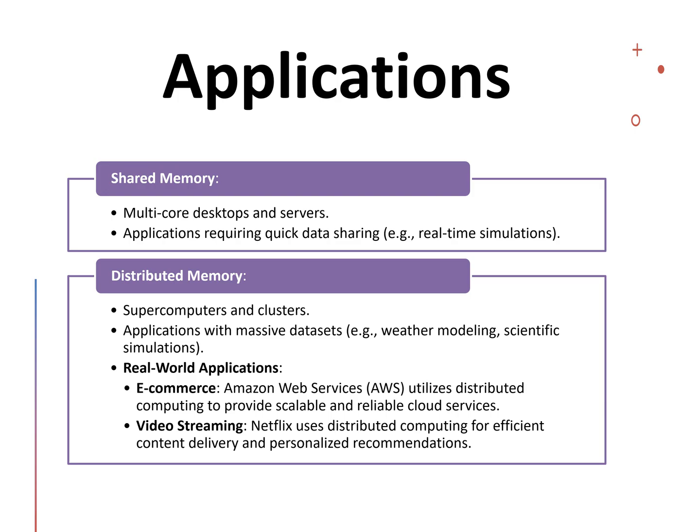What are the applications of shared memory and distributed memory? Shared memory is well suited for small-scale applications like desktops and servers, where simplicity and speed are priorities. Distributed memory, on the other hand, is used in large-scale environments like supercomputers and clusters. Real-world applications include e-commerce and video streaming — companies like Google and Netflix use distributed memory systems to handle massive amounts of data effectively.